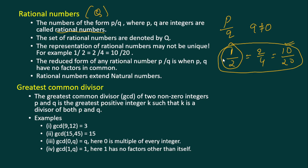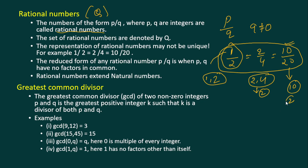For example, one and two have no common factor, so one-half is in reduced form. But two and four have a common factor of two, and ten and twenty have a common factor of ten and also five. So the reduced form of a rational number is when there is no common factor. Rational numbers are denoted by Q.